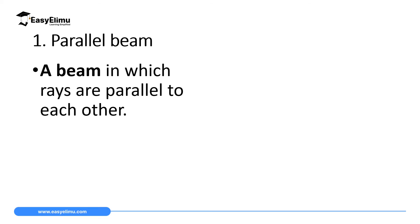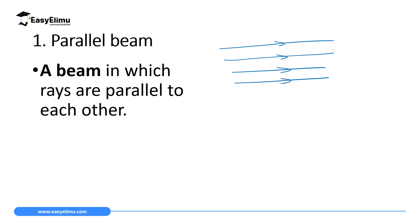We begin with parallel beams. From mathematics, we defined parallel lines as lines which don't meet or intersect. So when we talk about parallel beams, we are talking of rays which are moving parallel to each other, meaning not intersecting. They will look like this. Remember, for you to have a beam you must have rays, and for a ray to be a ray it must be a straight line with an arrow. When you have more than one ray and they are parallel to each other, it is called a parallel beam.